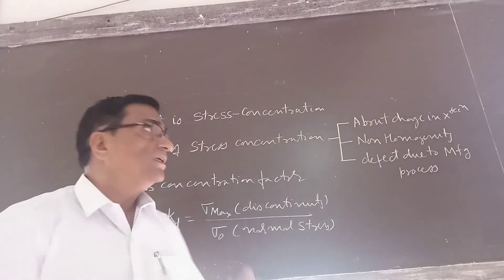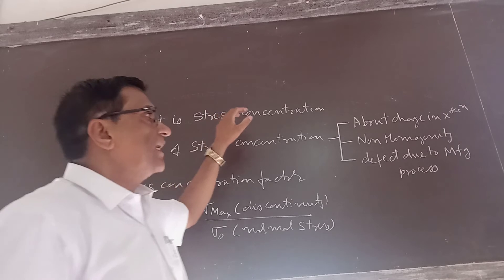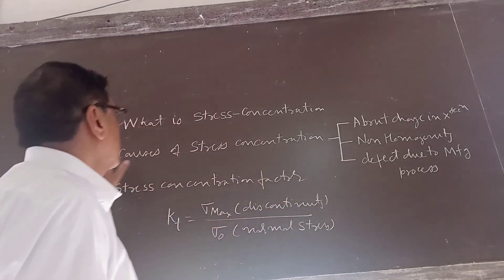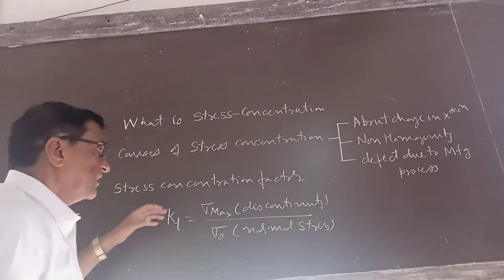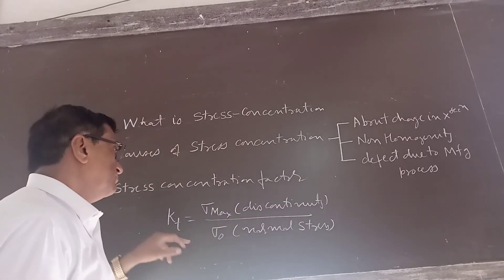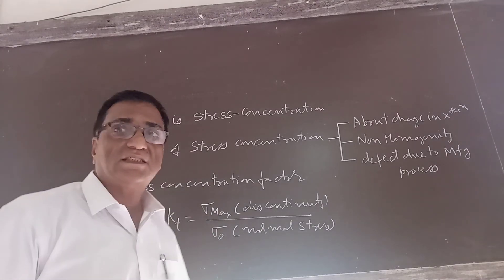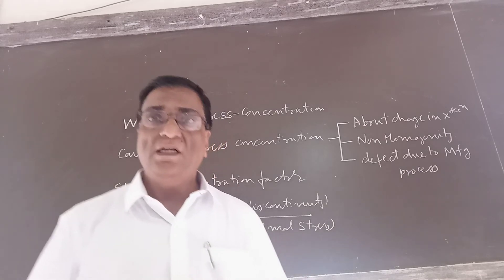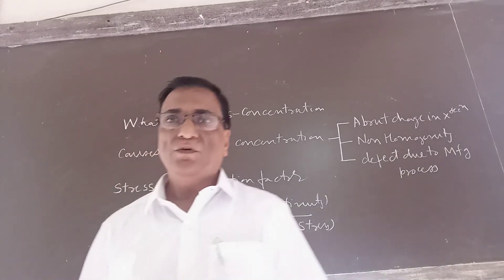In this session, we have studied what stress concentration is: it is the concentration of stresses due to abrupt changing dimensions, non-homogeneity, or defects from the manufacturing process. The stress concentration factor is the ratio of maximum stress at a discontinuity to the nominal stress of the member, indicated by KT. It is also known as the theoretical or geometrical stress concentration factor because it depends on the geometry of the member. Here we end the session — we will meet in the next session. Thank you very much.